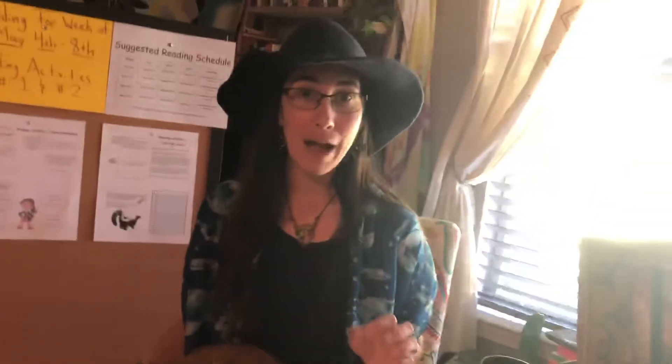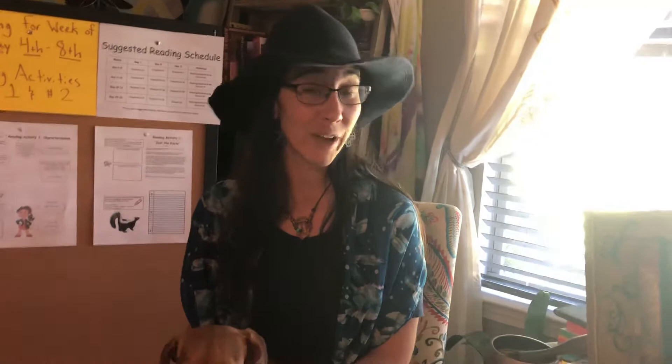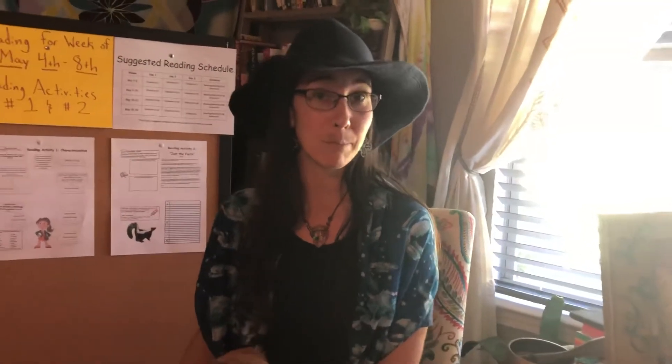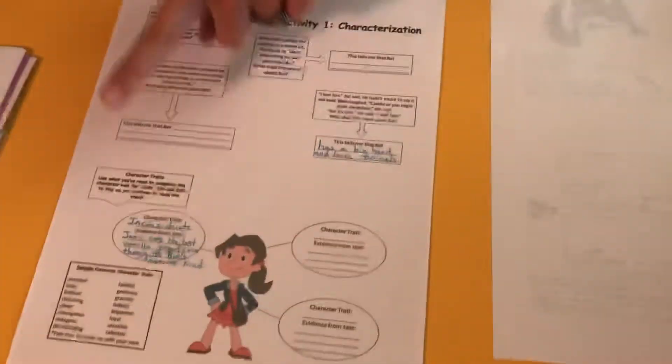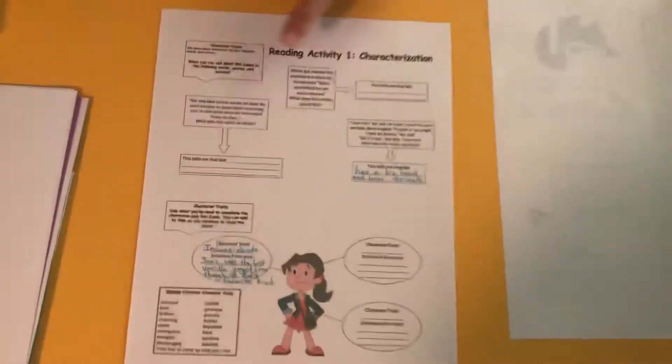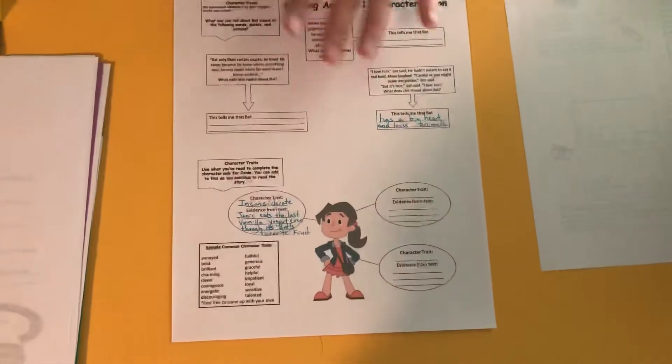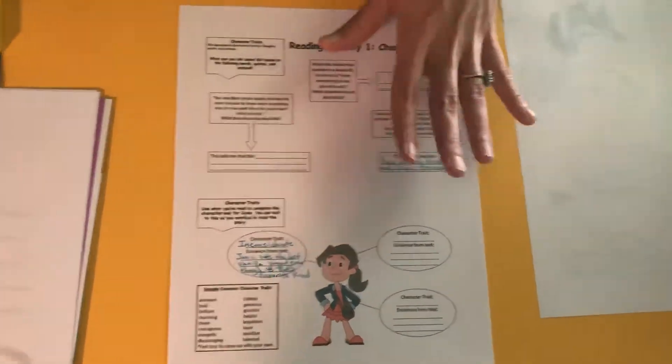So the first one is all about characterization and character traits. You Seekers should have no trouble with this because you have been working on identifying character traits based off of characters in novels all year long. So I think this is going to be fairly easy for you, especially since Bat is such a great character with so many relatable character traits. So let's take a look at your sheet here — it's got different little bubbles that it wants you to fill in. I'm going to talk to you about some of these bubbles and I even filled in a couple of examples for you already.